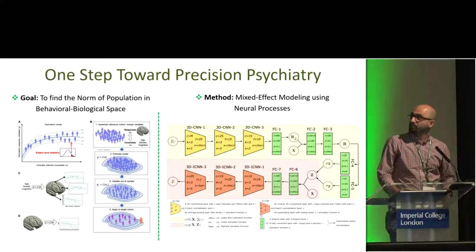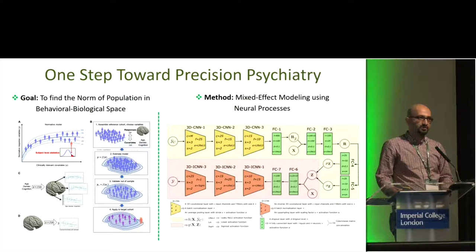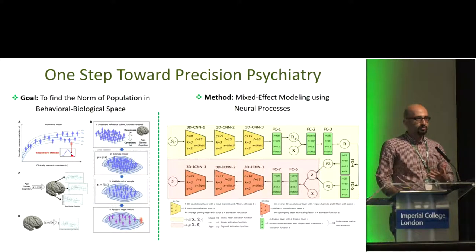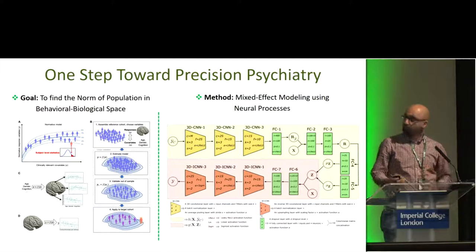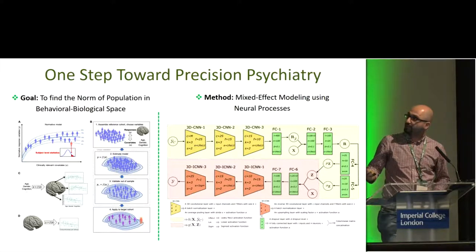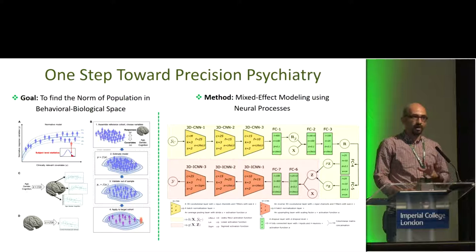What we are trying to present here is a very tiny step toward precision psychiatry, where we apply a kind of old-school but recently revisited approach called normative modeling, in order to learn the norm of the population in behavioral and biological variable space. It is compatible with RDoC and it is unsupervised.